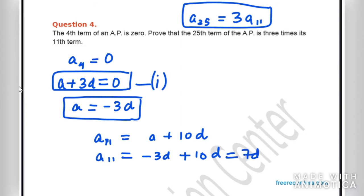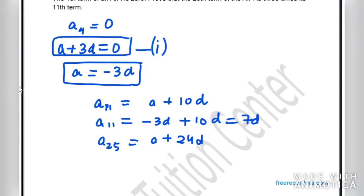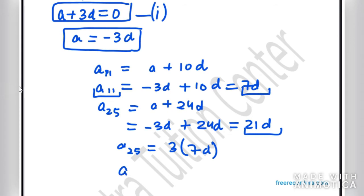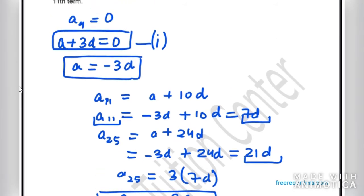Now finding A25: A25 = A + 24D = −3D + 24D = 21D. We can write 21D = 3 × 7D, and since 7D = A11, we get A25 = 3 × A11. This is what we needed to prove. These are all important questions from previous years, so you must do them.